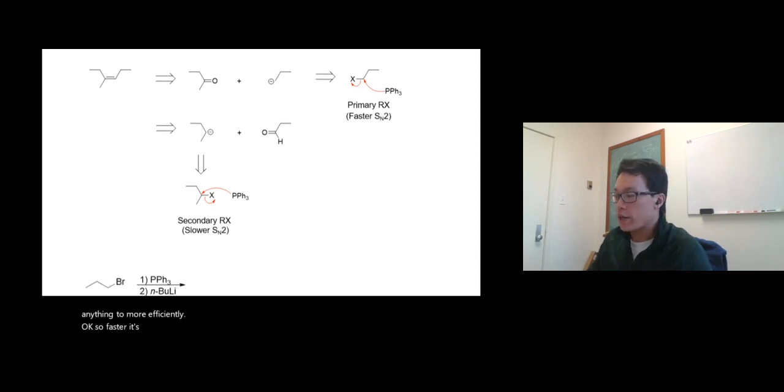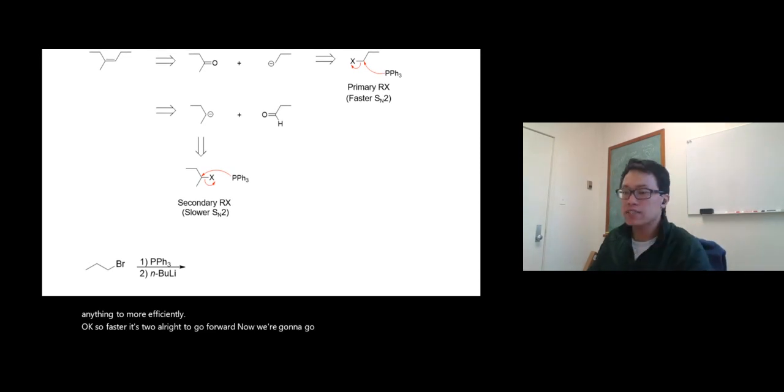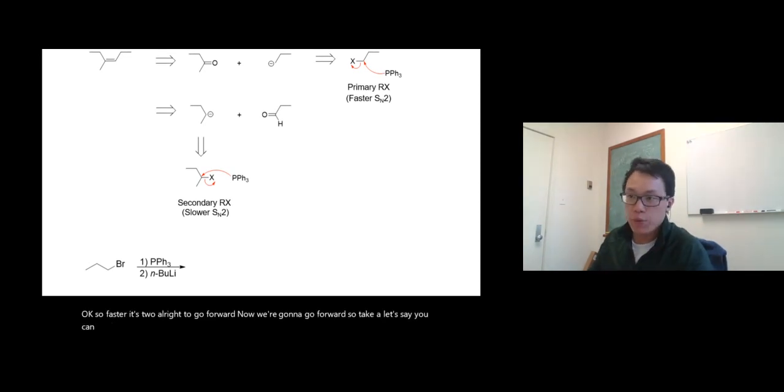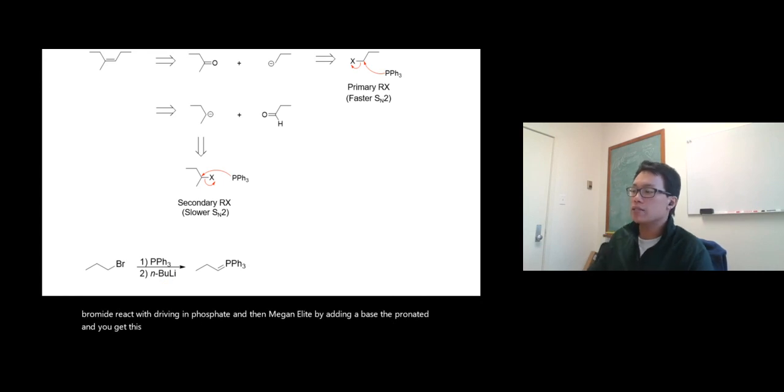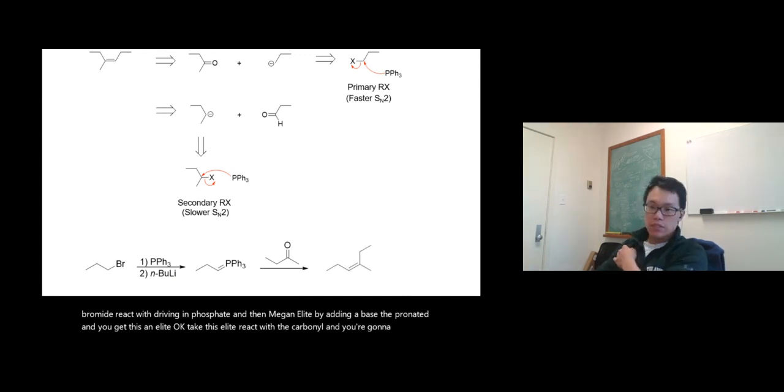All right, let's go forward now. So you can use chlorine, you can use bromine, iodine. I'm using tripropyl bromide react with triphenylphosphine and then make an ylide by adding a base, deprotonate it, and you get this—this is an ylide. Take this ylide, react with the carbonyl, and you're gonna get this compound. That's the product.